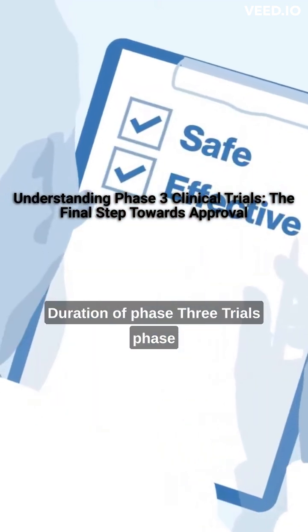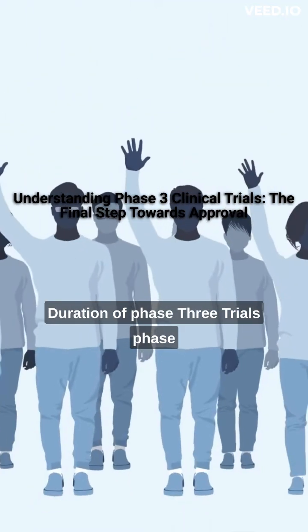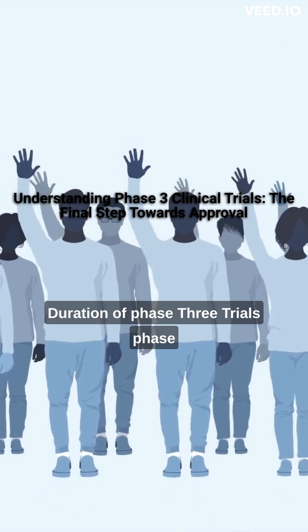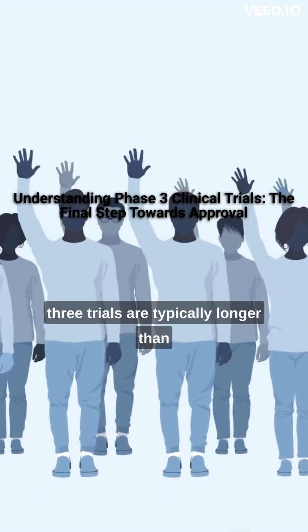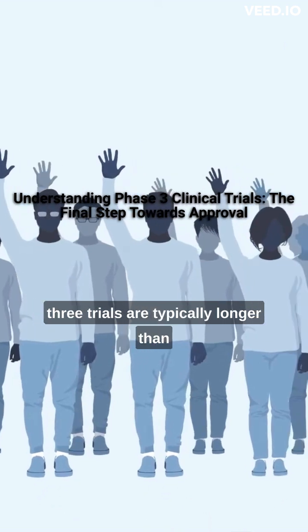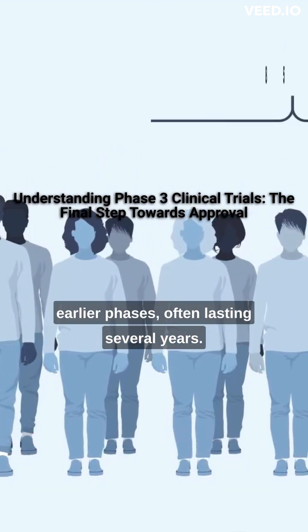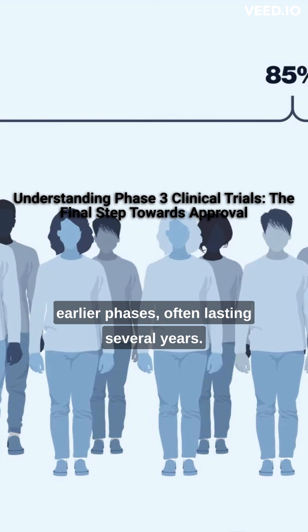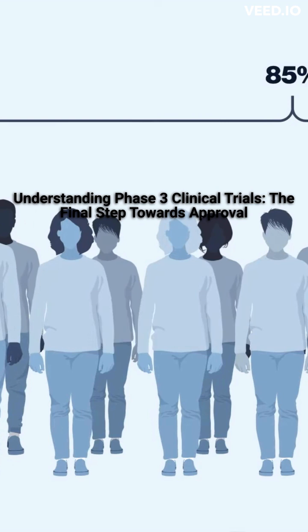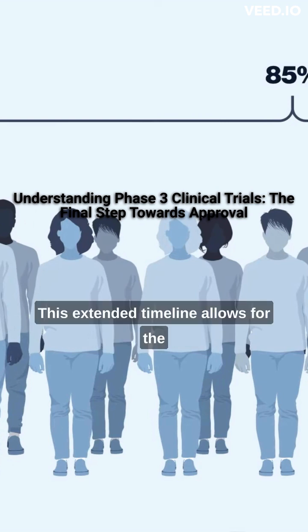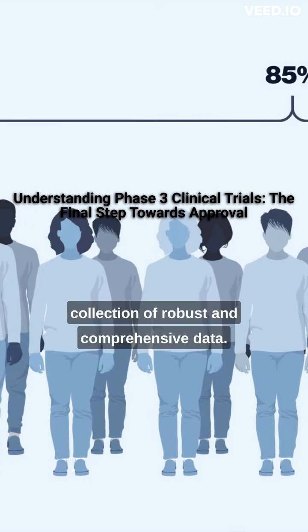Duration of Phase 3 trials: Phase 3 trials are typically longer than earlier phases, often lasting several years. This extended timeline allows for the collection of robust and comprehensive data.